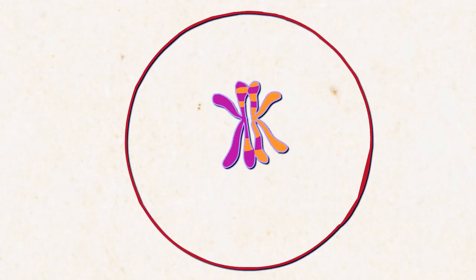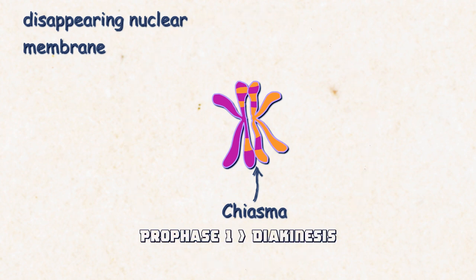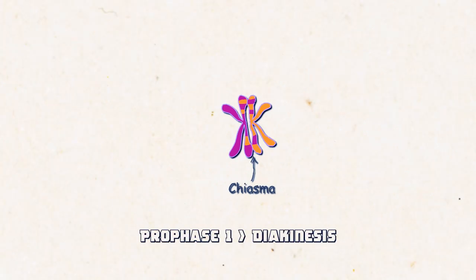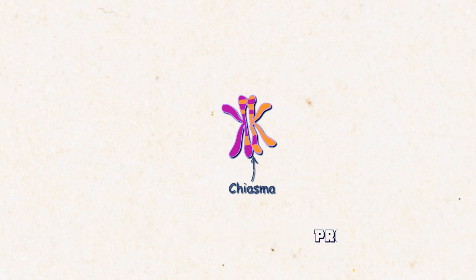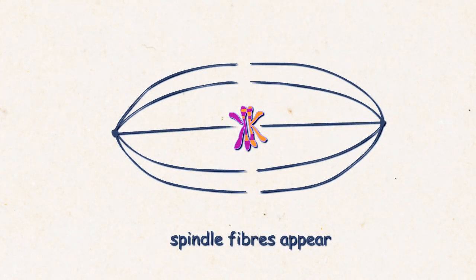Nuclear membrane starts to disappear in the diakinesis stage and the spindle apparatus appears. But the chromosomes still remain attached at the site of chiasma. With this, meiosis 1 prophase 1 stage ends.